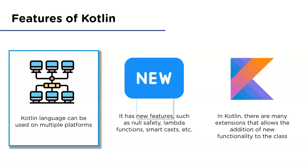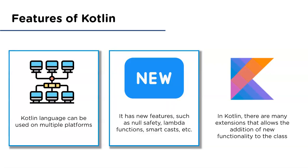Kotlin also has modern features like null safety, which reduces problems associated with null references; lambda functions, which are anonymous functions; and smart casts, which are used to track conditions inside if expressions.